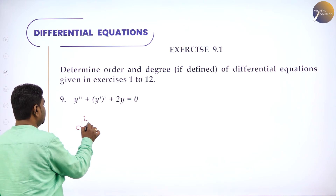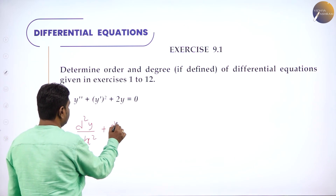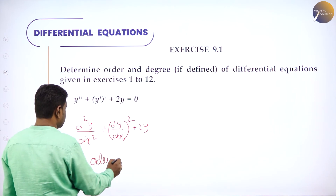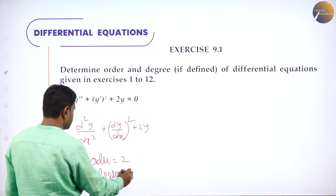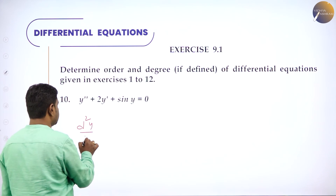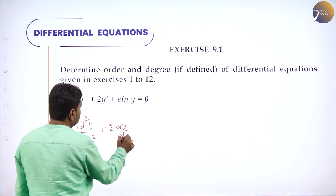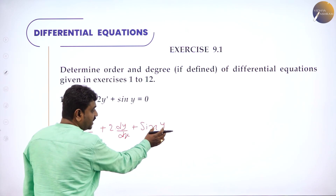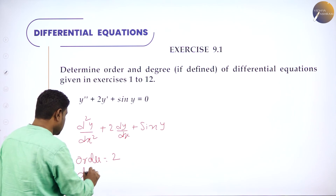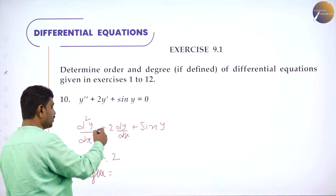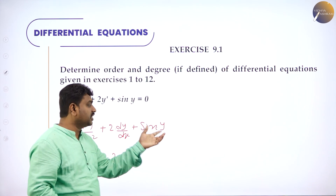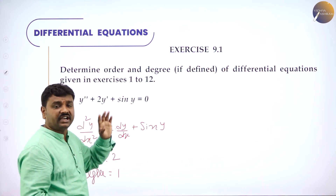Then y'' + (y')² + 2y: order is 2 times differentiated, degree is overall power 1. Next: y'' + 2y' + sin y — written as d²y/dx² + 2·dy/dx + sin y. Note that sin y is not sin(y'), so inside sine we do not have a derivative. Order is 2. Degree: overall power of d²y/dx² is 1, and since derivative is not inside the function, degree is defined and equals 1.